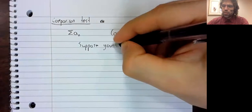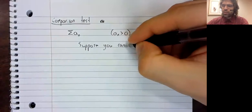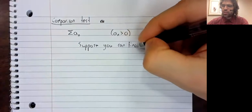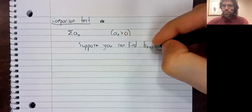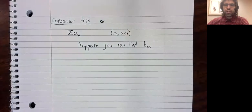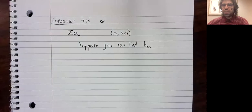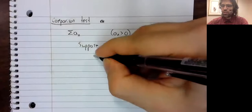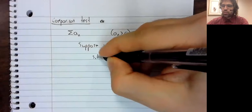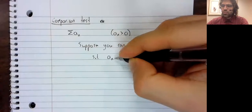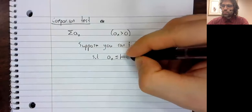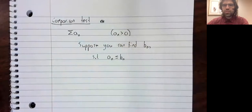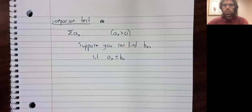Suppose you can find a new set of terms, B sub N, such that A sub N is less than or equal to B sub N.